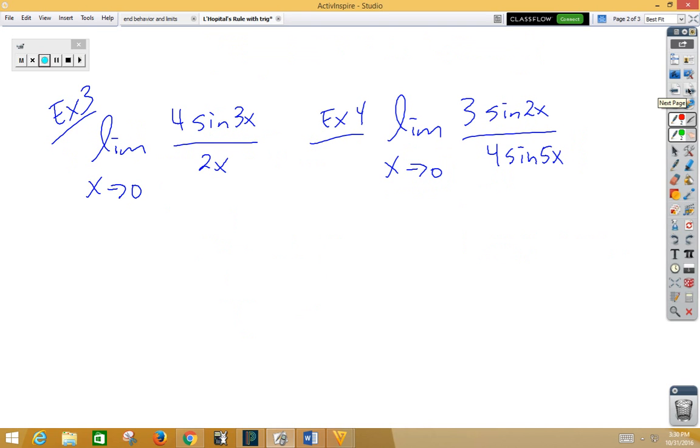In example 3, again plug in, we get 0 over 0. Let's do L'Hopital. We get 2 on the bottom. On the top, we have 4 cosine 3x times 3.